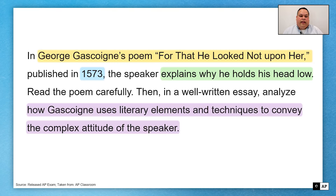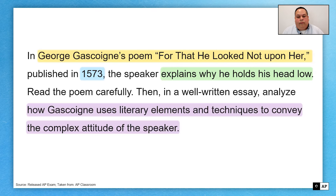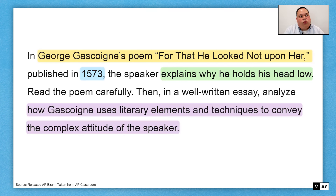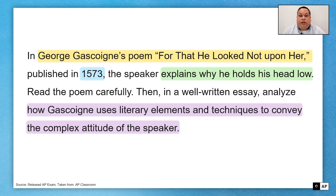The full prompt is: in George Gascoigne's poem 'For That He Looked Not Upon Her,' published in 1573, the speaker explains why he holds his head low. Read the poem carefully. Then, in a well-written essay, analyze how Gascoigne uses literary elements and techniques to convey the complex attitude of the speaker. There are two elements to our task: using literary elements and techniques to explain how the complex attitude is conveyed. In this video, I want to focus on that complex attitude; in a subsequent video, I'll focus more on the literary elements and techniques.